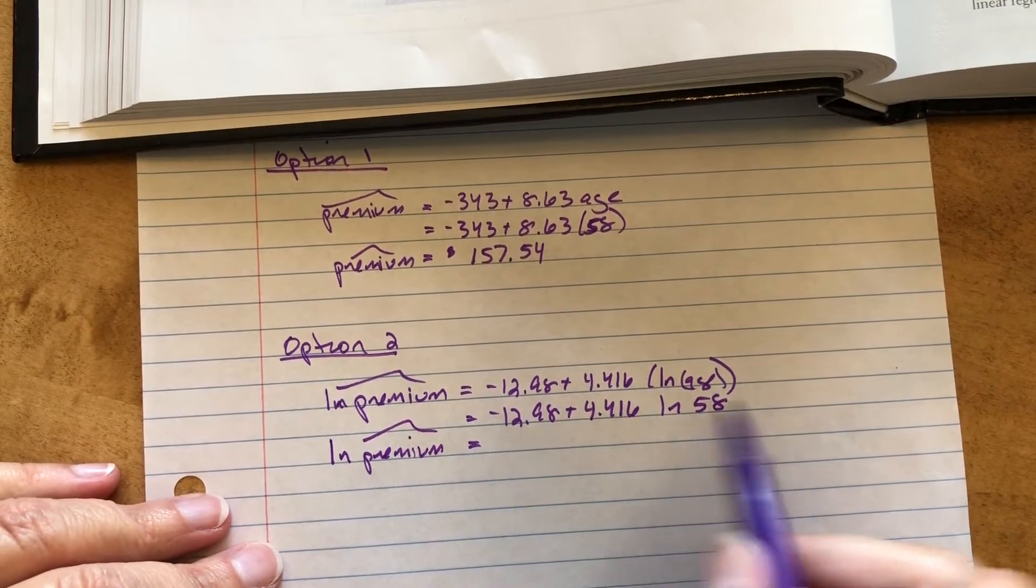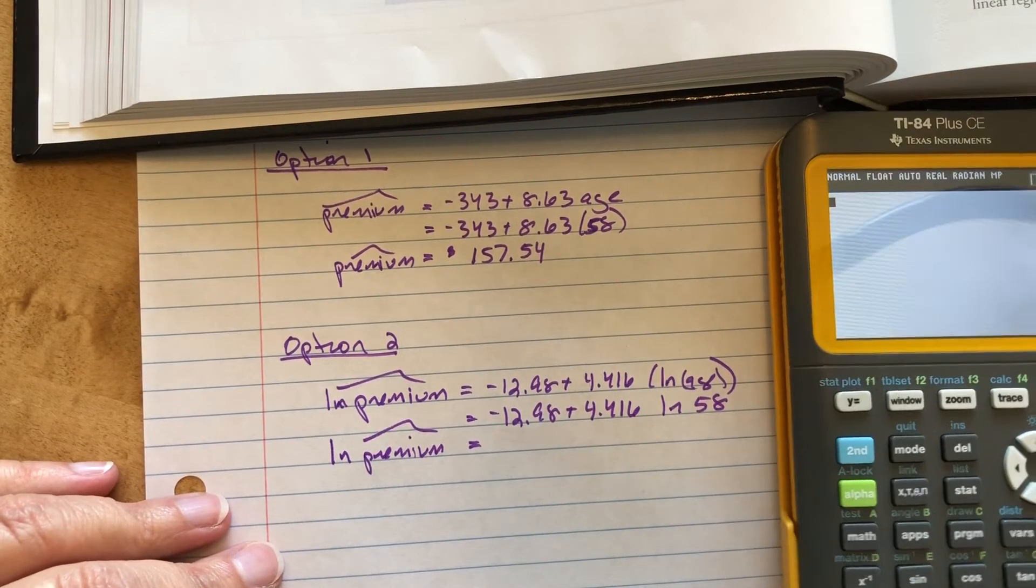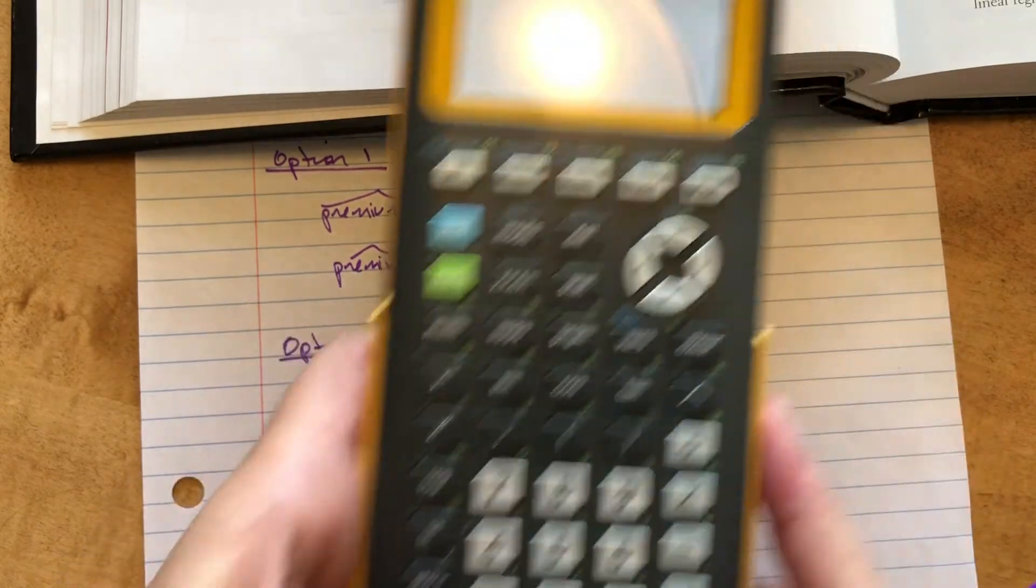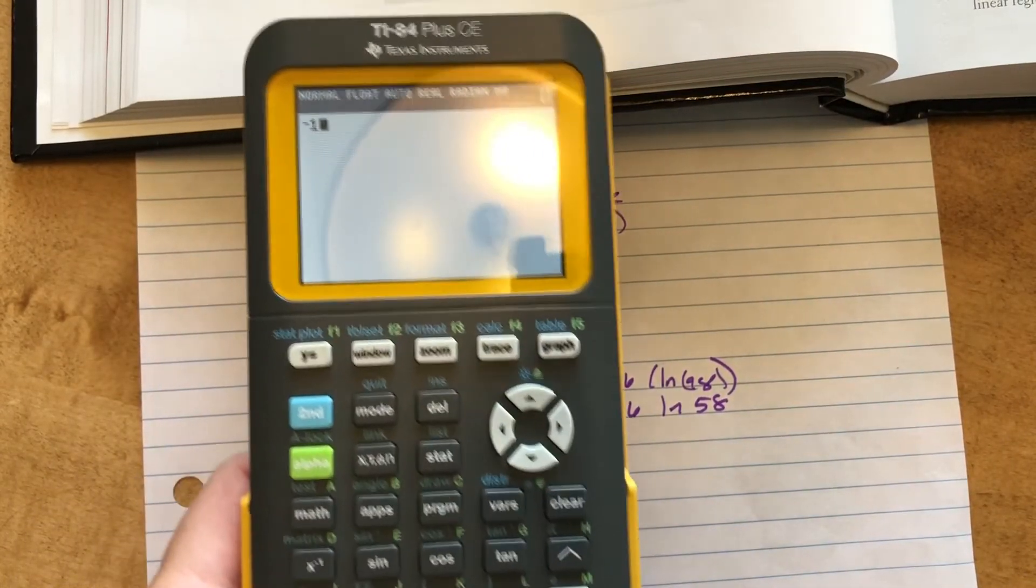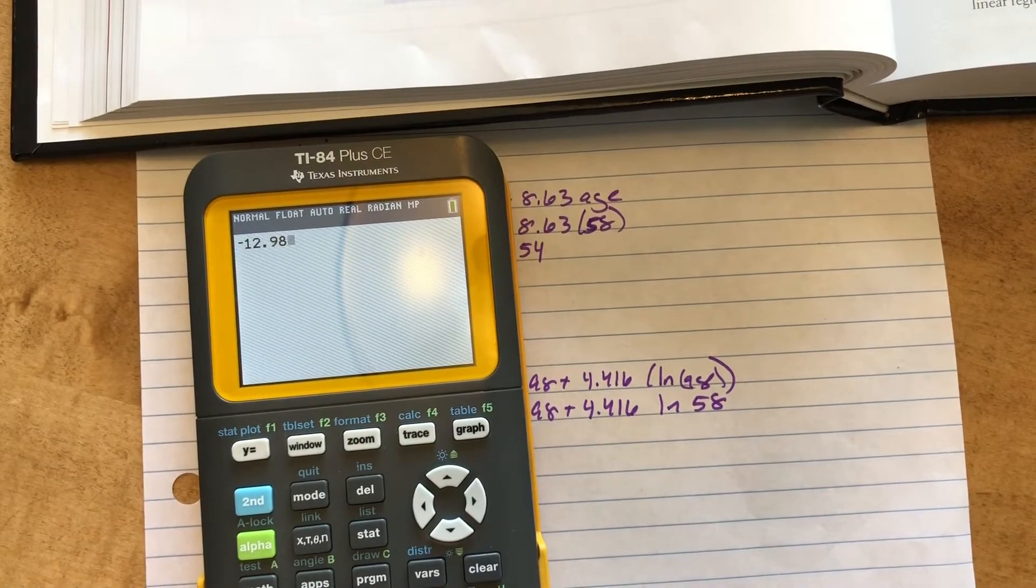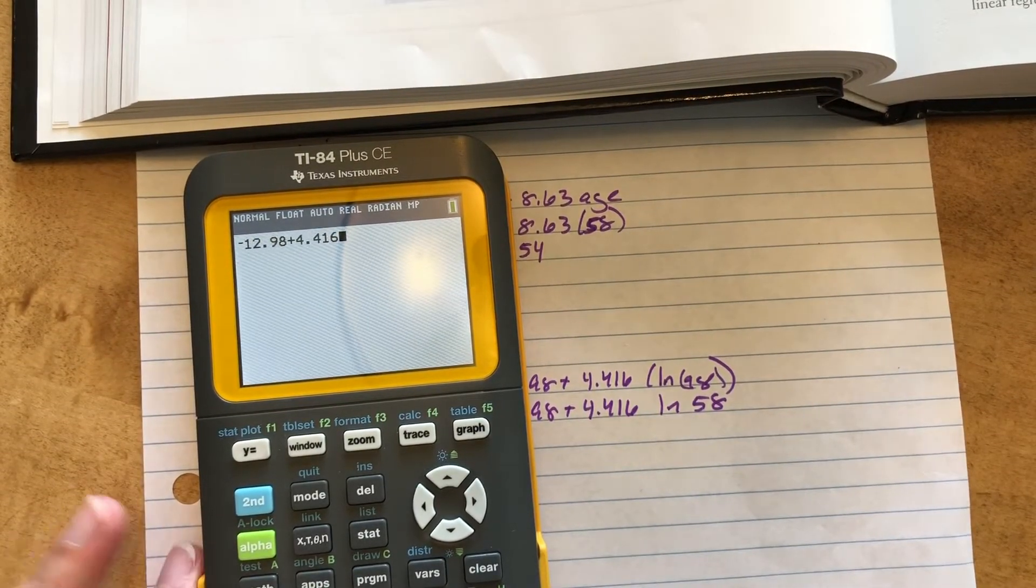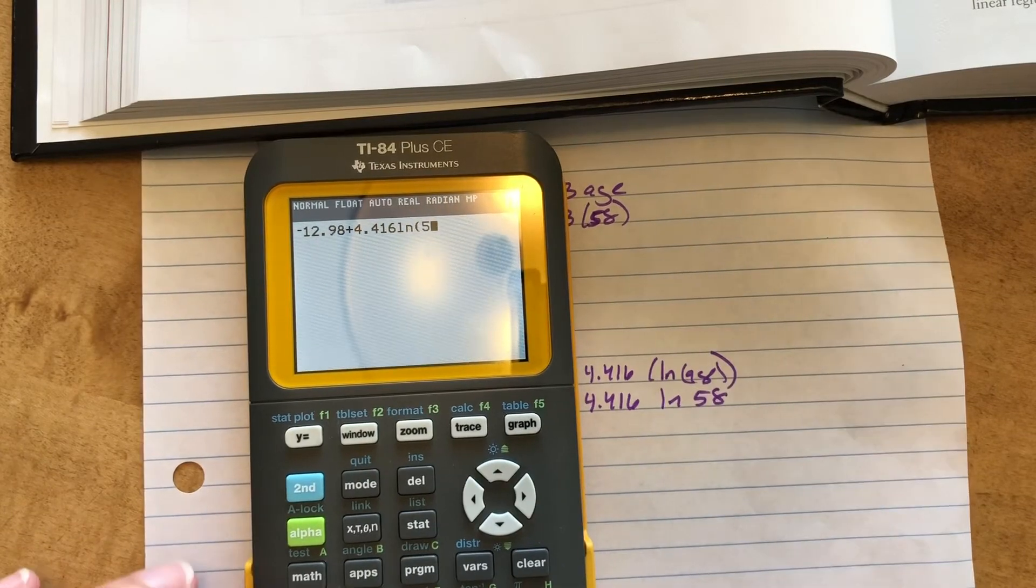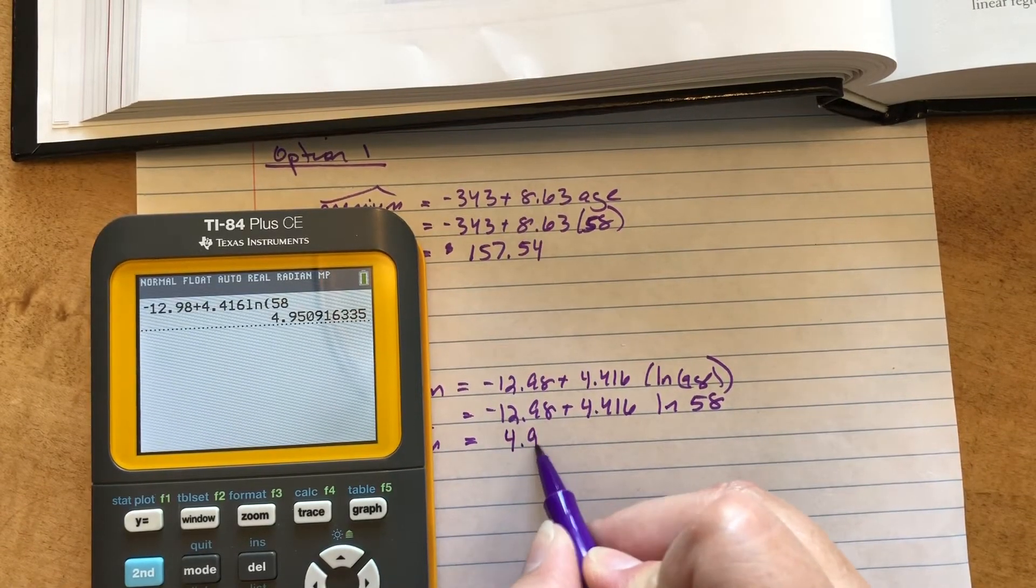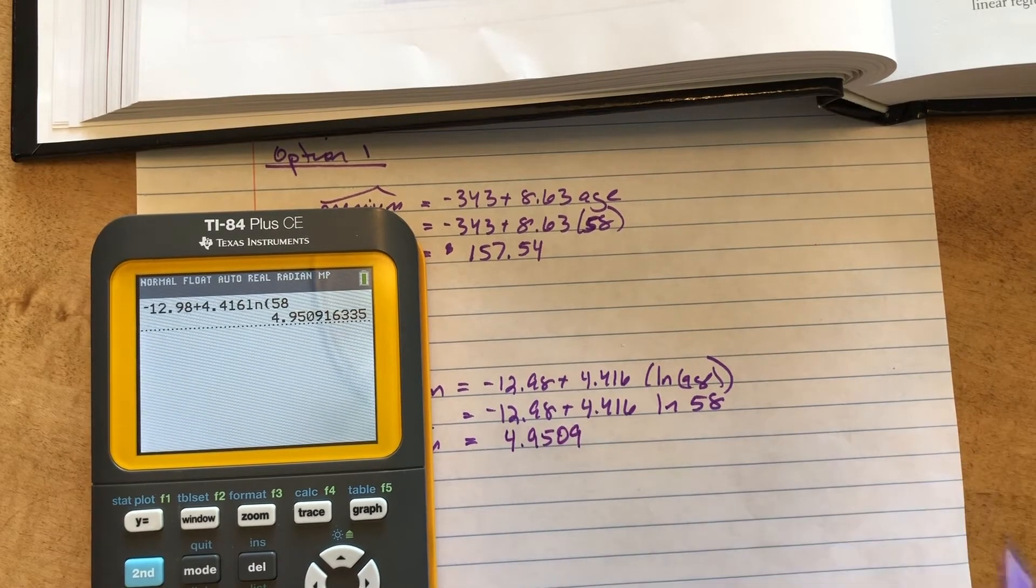So natural log of premium. Put that in the calculator, put that in the calculator and you have a natural log button right here. Natural log button is right here. So I'll pull this, throw this one in. I get negative 12.98 plus 4.416 times the natural log of 58 and I get this. 4.9509, we'll just do a couple decimals.